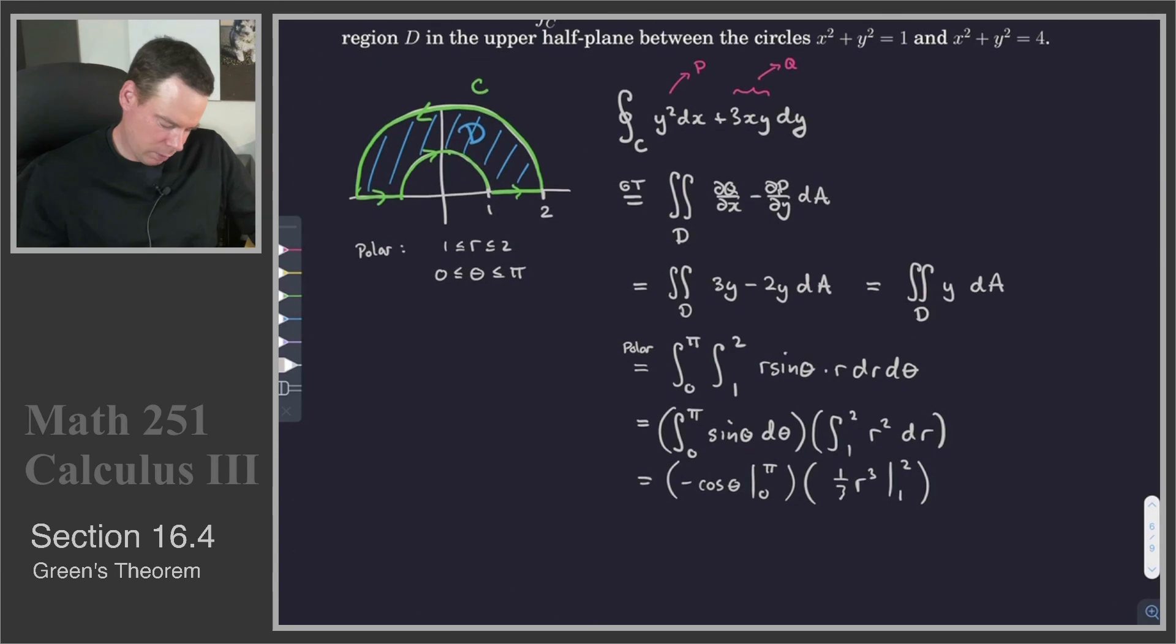And so this becomes negative cos of pi. Negative cos of pi is 1. And then we've got a minus, minus cos of 0. So that's basically 1 plus 1 or 2. And then we've got times 1 third 2 cubed, which is 8 minus 1. Which becomes 14 thirds.